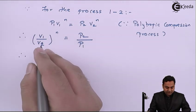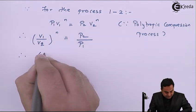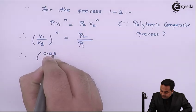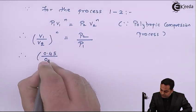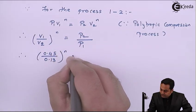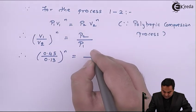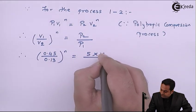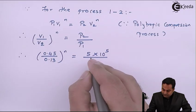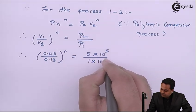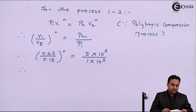Now V2 value and V1 both are given. V1 is 0.45 and V2 is 0.13, so (0.45/0.13)^n is equal to P2 which is 5×10^5, divided by P1 which is 1×10^5.